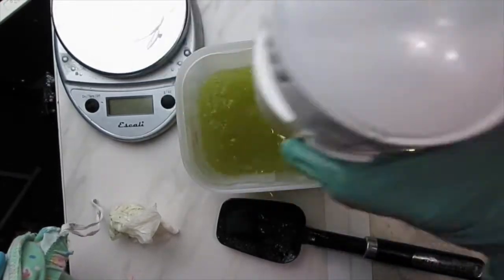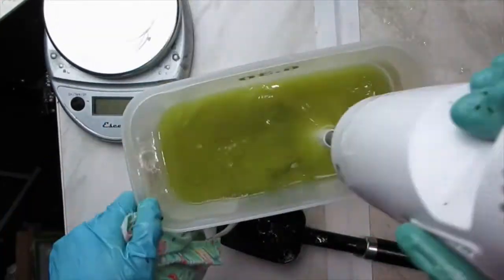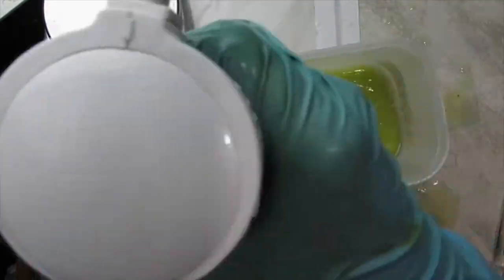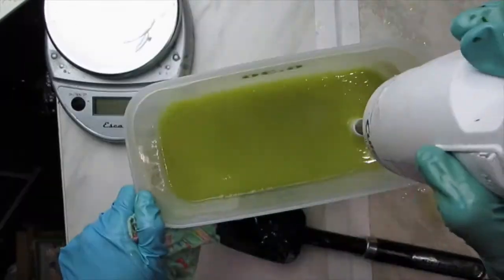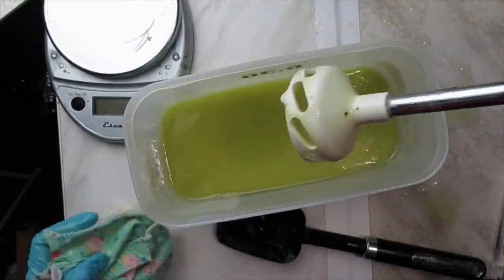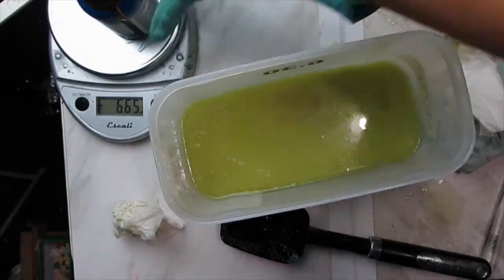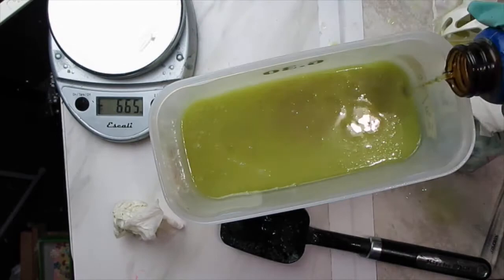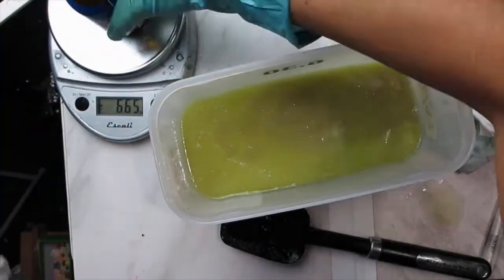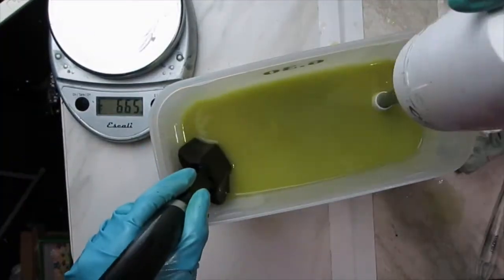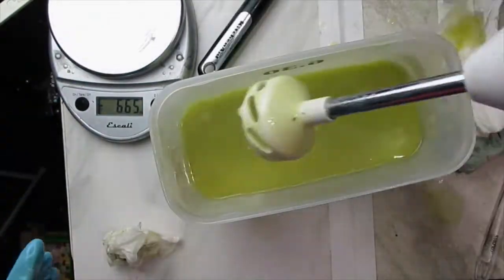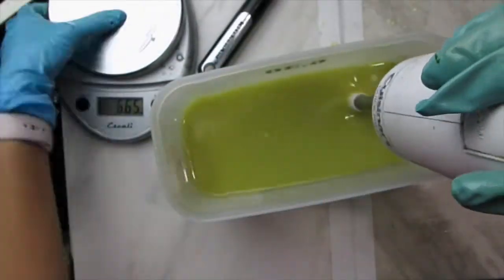Now I'm gonna give it a quick burst with a stick blender and start blending the oils and the lye water solution so that it becomes emulsified. Then I'm going to add the fragrance—for this amount of oils I need about 1.4 ounces. After adding it I continue with the stick blending until it reaches trace.